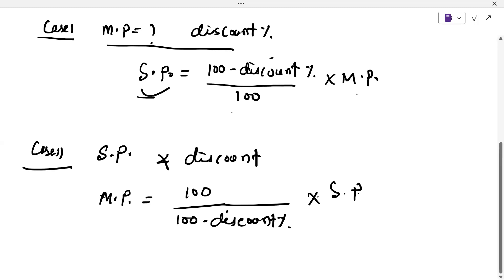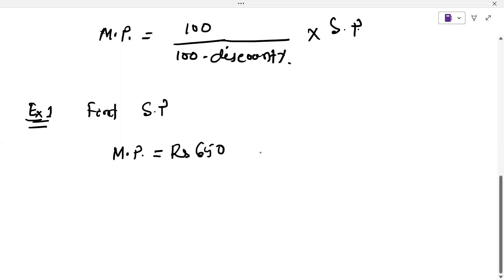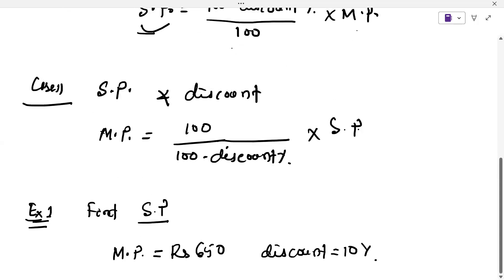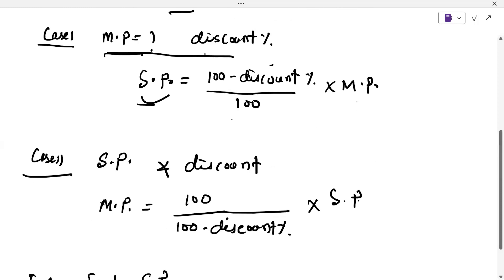Example one: Find the selling price. Given market price MP = 650 rupees and discount = 10%. We need to find selling price. Recall the formula for Case 1 — when market price and discount are given: selling price equals (100 minus discount percentage) divided by 100, multiplied by market price.